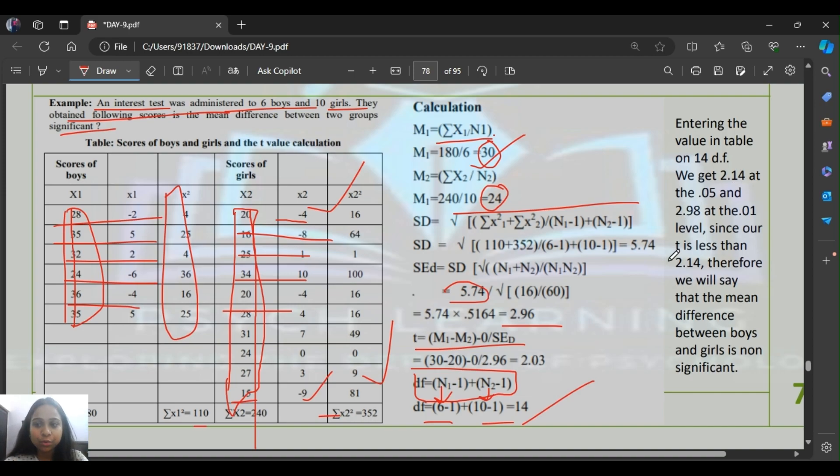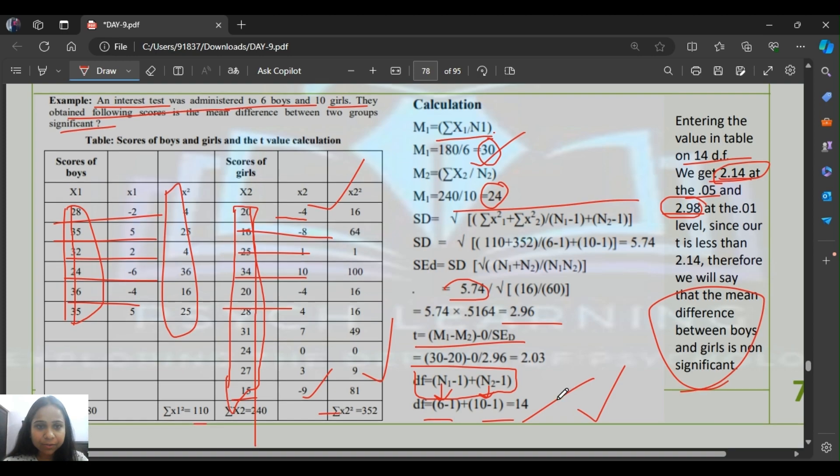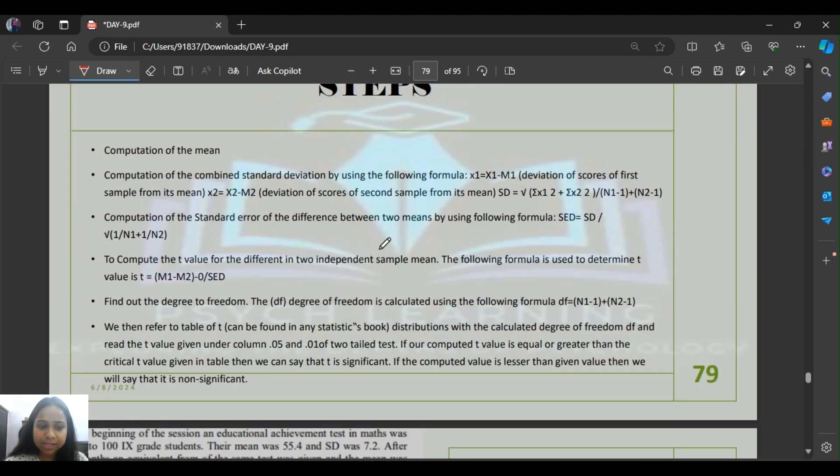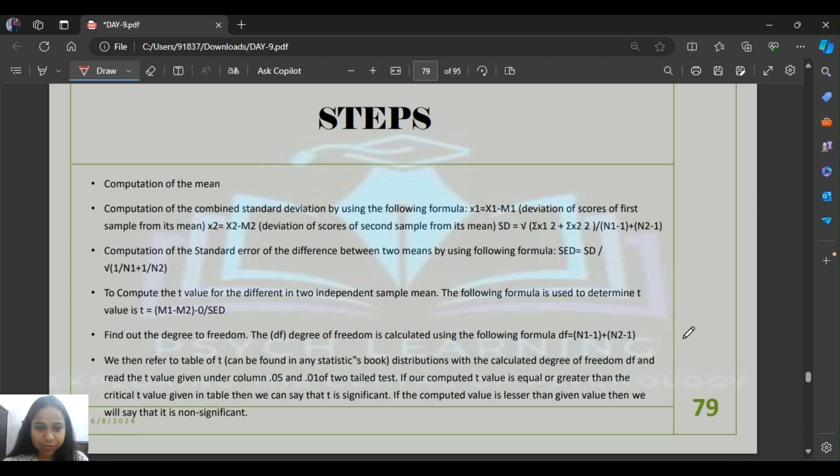Now when you check the T table, which you can find on Google or ask me for, you see the value at 14 degrees of freedom is 2.4 at 0.05 level. Our calculated value is 2.9. We will say that the mean difference between boys and girls is significant. When our calculated value is greater than table value, we reject the null hypothesis. If it's less than table value, we accept the null hypothesis. Null hypothesis states there is no significant difference between the two groups. I hope you understood this example.